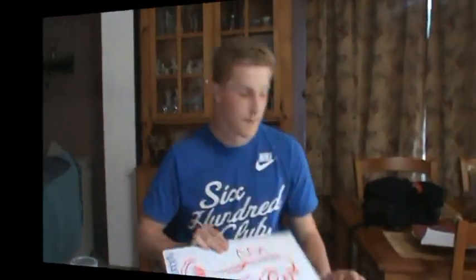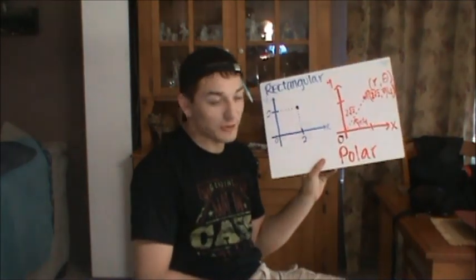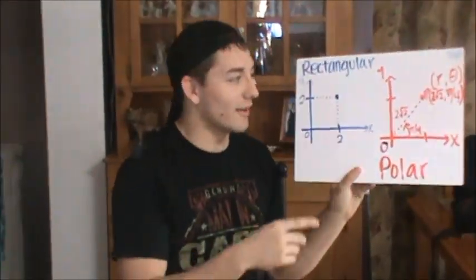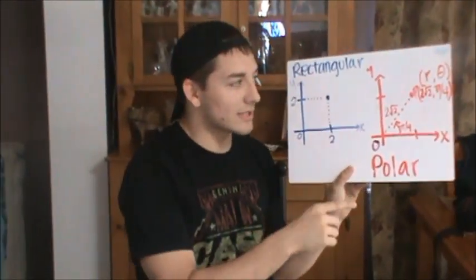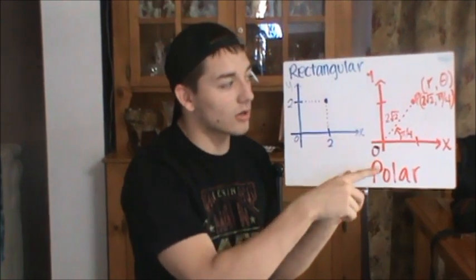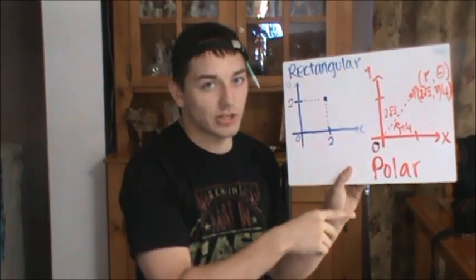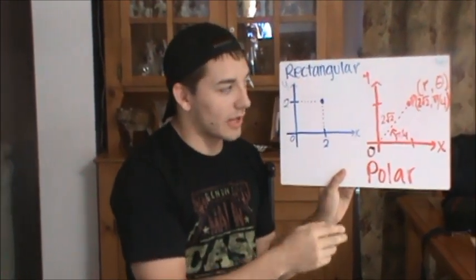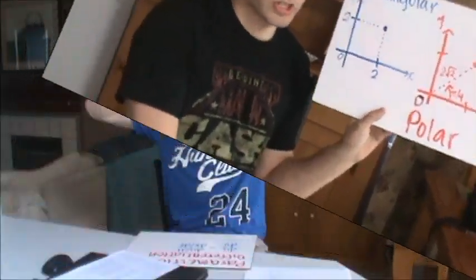I'm Logan. I'm comparing rectangular coordinates and polar coordinates. Rectangular coordinates are obviously normal. In polar coordinates, r is the direction and theta is the angle at which the direction is at.